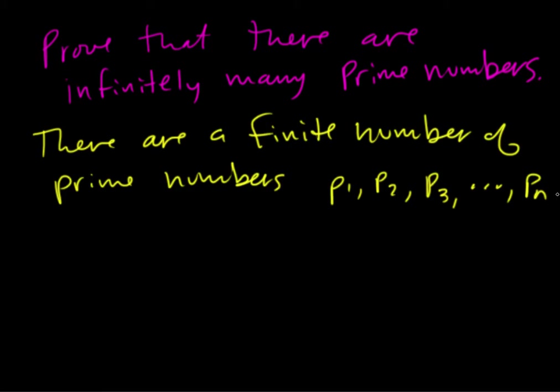Every positive integer greater than one is either a member of the list or is divisible by a member of the list. So what that means is every single positive integer can either be divided by a prime number or is a prime number.